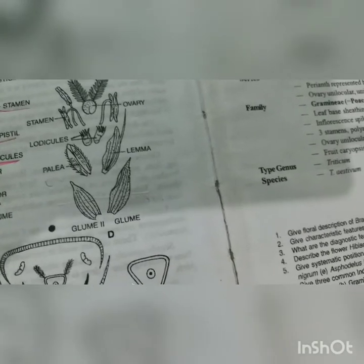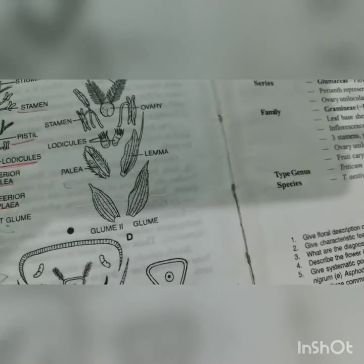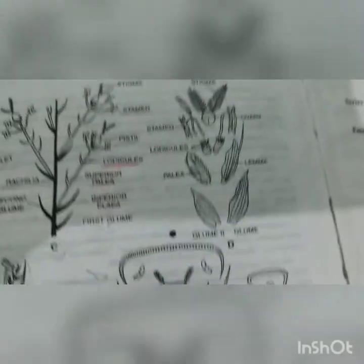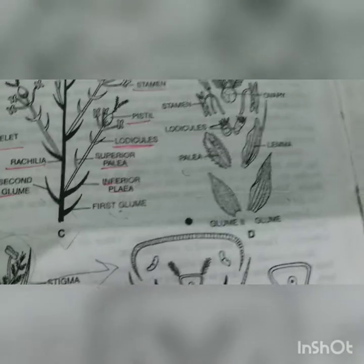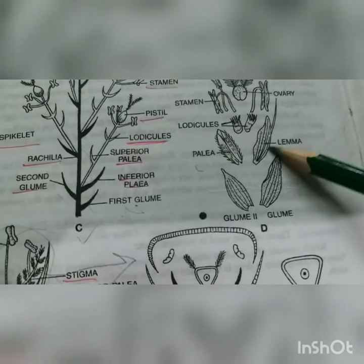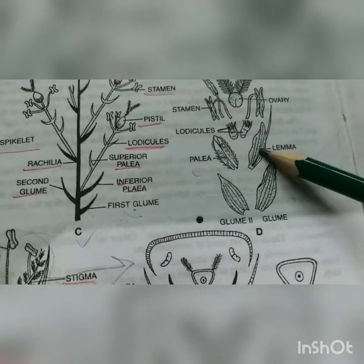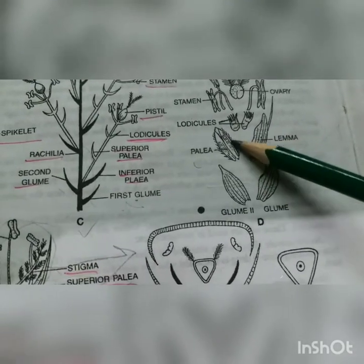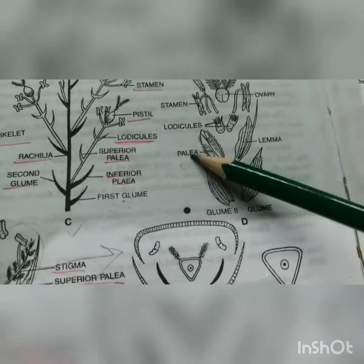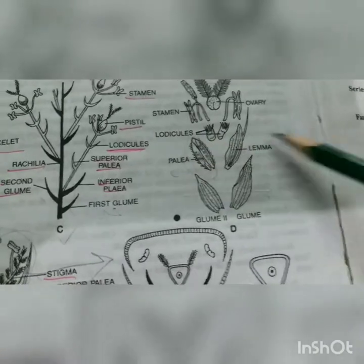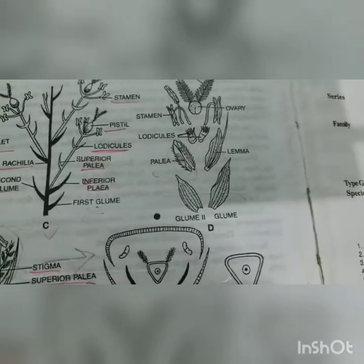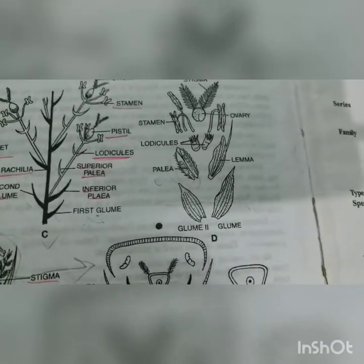The lemma is six-nerved - one, two, three... six - and the palea is boat-shaped, just as if you are riding in a boat on a lake. And they are keeled. Then we have the lodicules, then stamens and gynoecium.